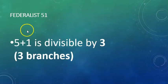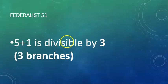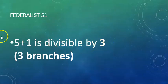Let's go to Federalist 51. Five plus one is six, and that is divisible by three — three branches.